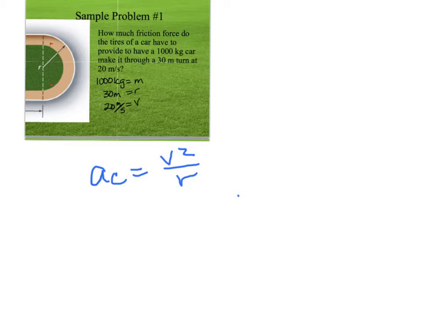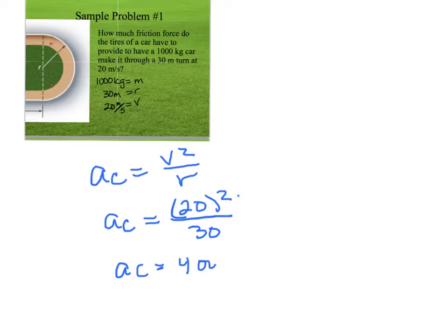We know from before that our centripetal acceleration is our velocity squared over our radius. So our centripetal acceleration is 20 meters per second squared divided by 30. That's going to equal 400 divided by 30.